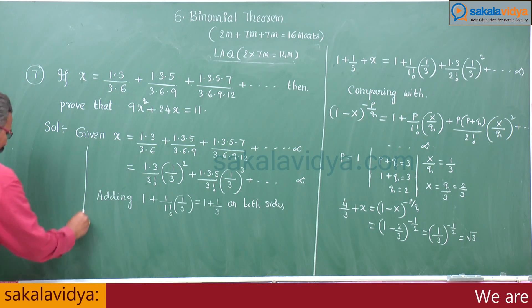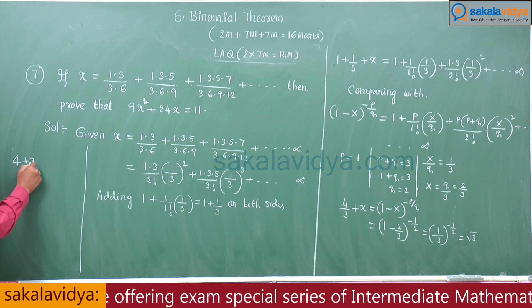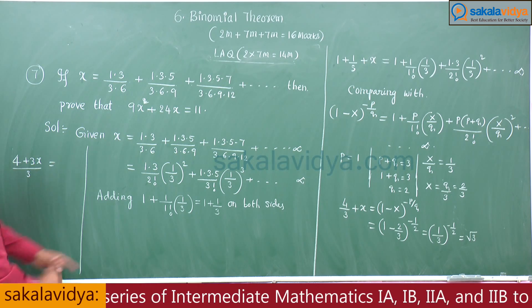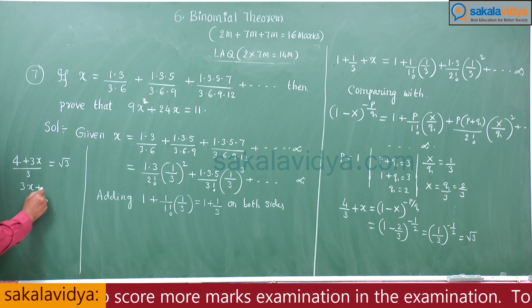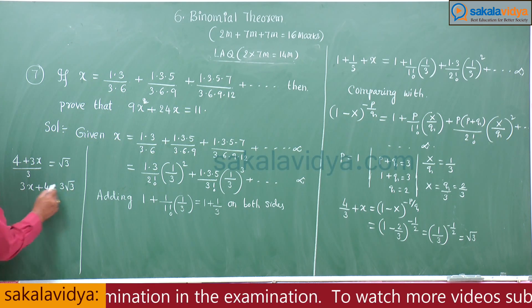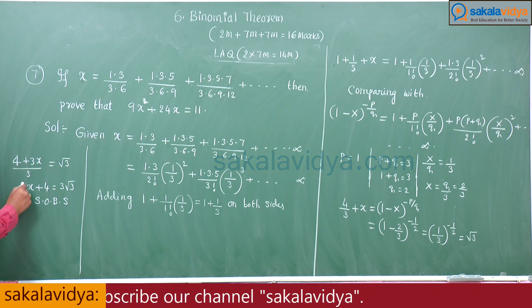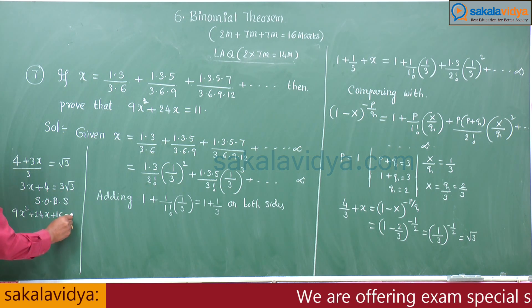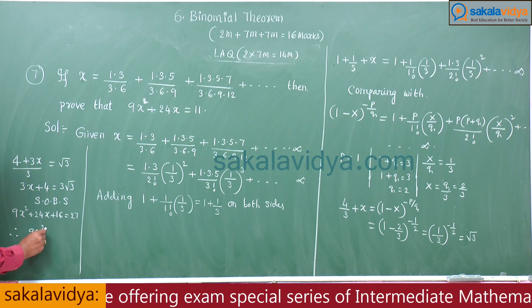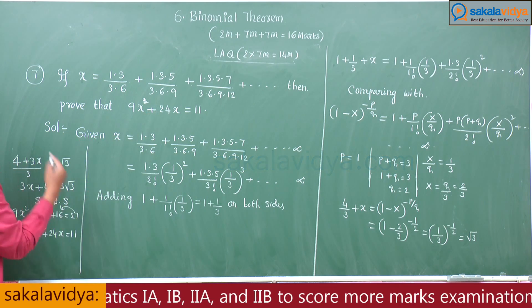The last step: 4/3 + x = (4 + 3x)/3 = √3. Cross-multiplying: 3x + 4 = 3√3. Squaring both sides: 9x² + 24x + 16 = 27. Therefore, 9x² + 24x = 27 − 16 = 11. Hence it is proved.